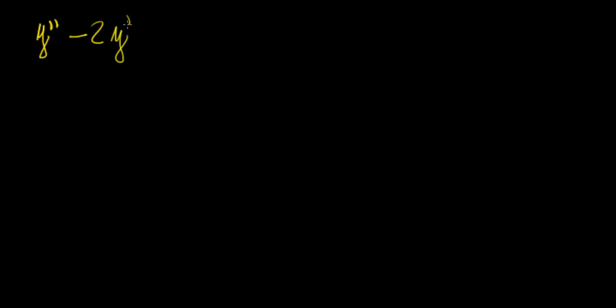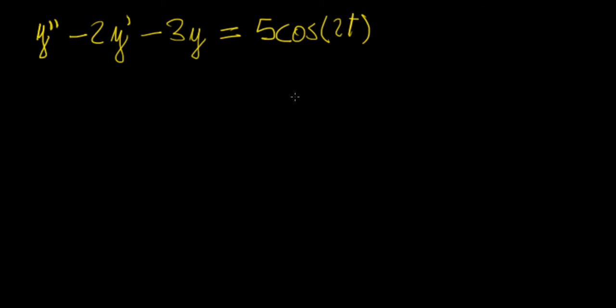So far we have dealt with differential equations that are non-homogeneous, that have either a polynomial on the right-hand side or an exponential function on the right-hand side. In this video I'm going to show you what to do when you have a trigonometric function instead. So let's use the same differential equation as before, minus 3y, but this time the function of t is going to be 5 cos 2t — that's the trigonometric function.